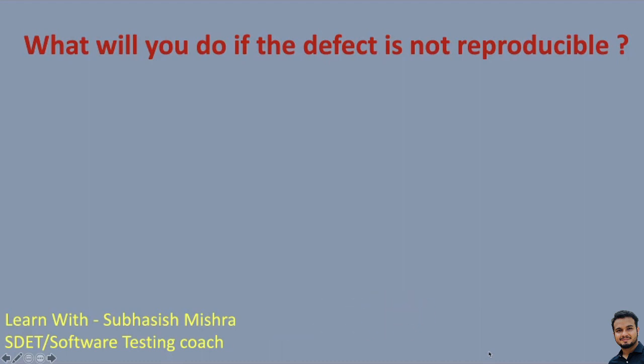So what will you do in this case? Because when you tested it, you saw the defect was there, and now you are also not getting the defect. Does that mean it is an invalid defect and you will close it? No, you should never do that. You should first convince yourself that there was no issue. So here are a few points I am going to tell you — what you should do if you are not able to reproduce the issue.